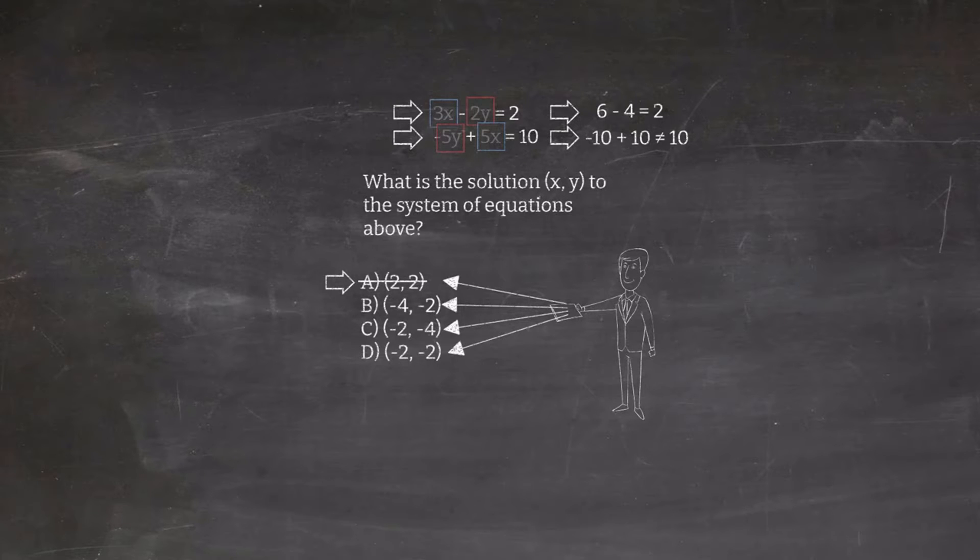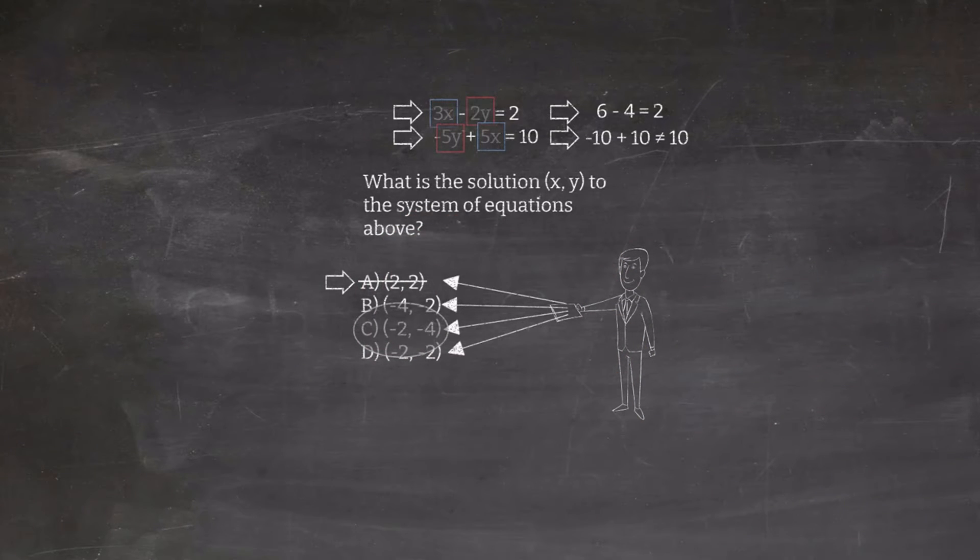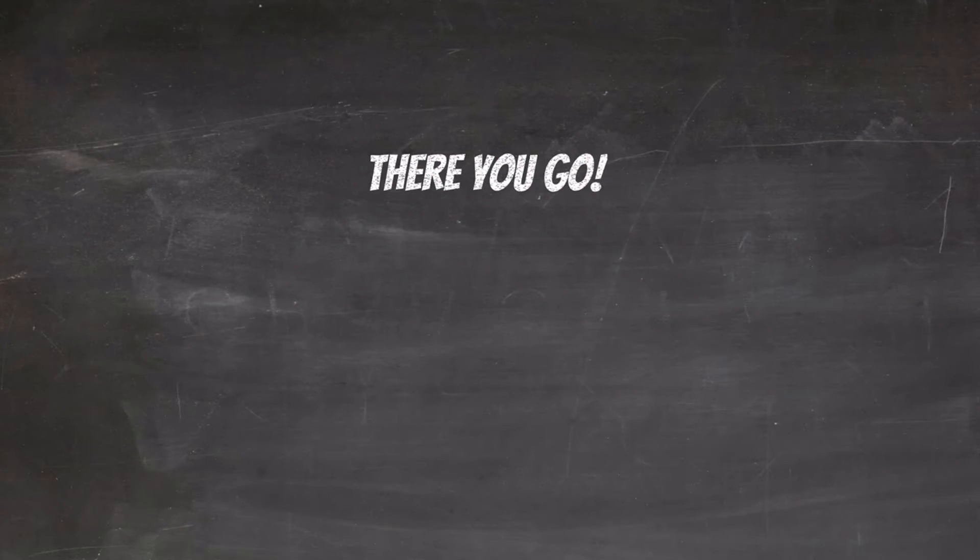Now let's just move through the other options and we find out that the only one that works for both lines is negative 2 comma negative 4. And so there you go. Easy money. Remember it's all about picking the low-lying fruit.